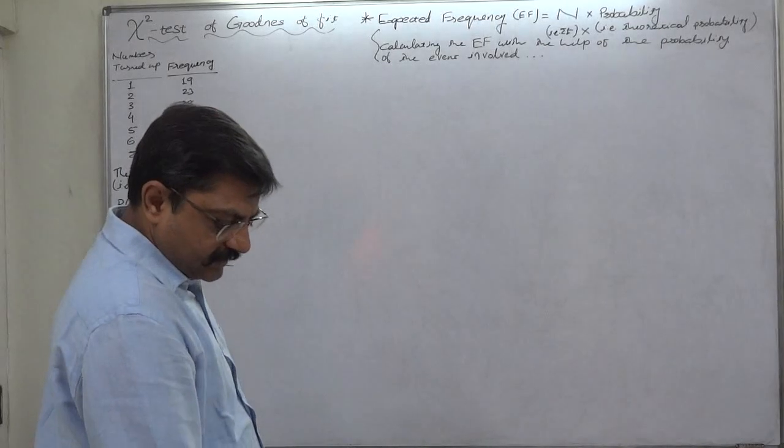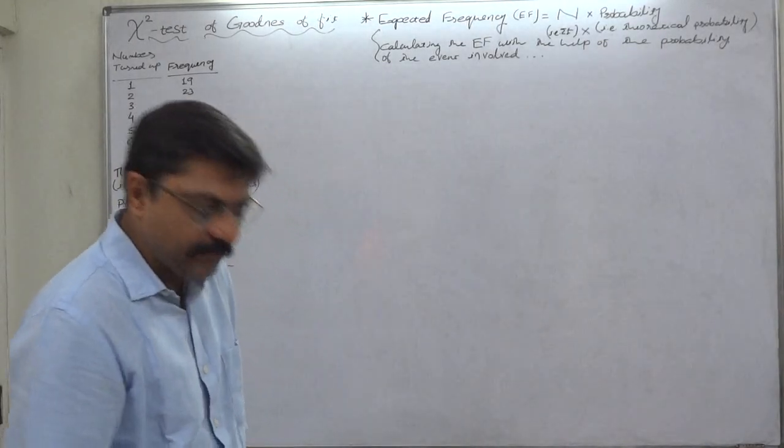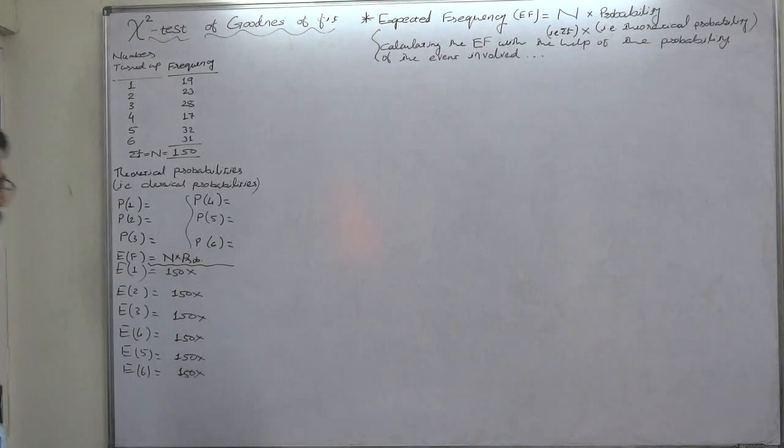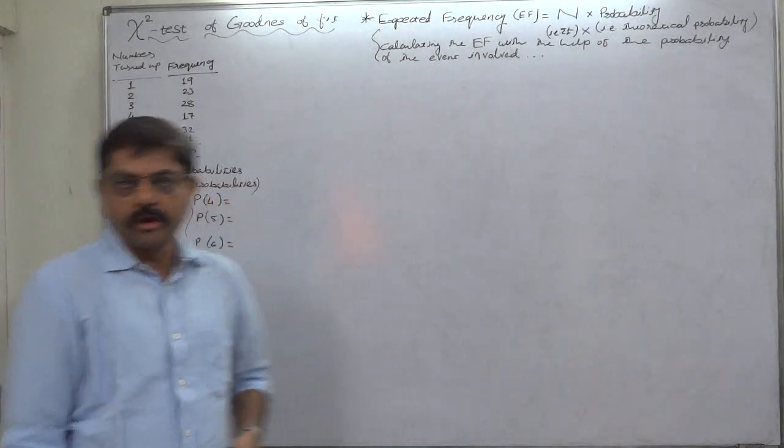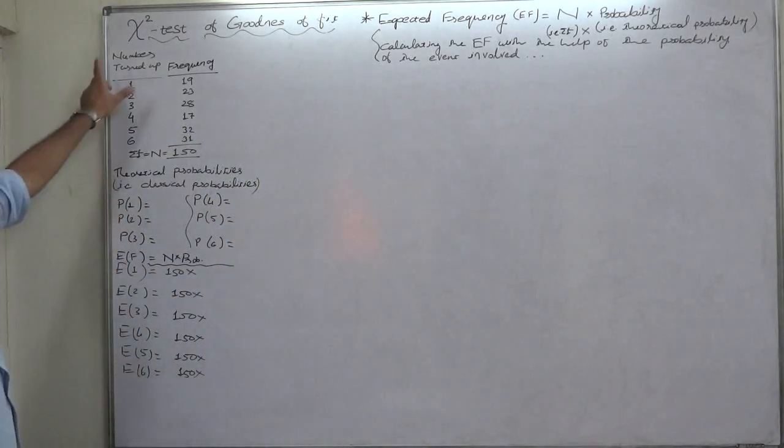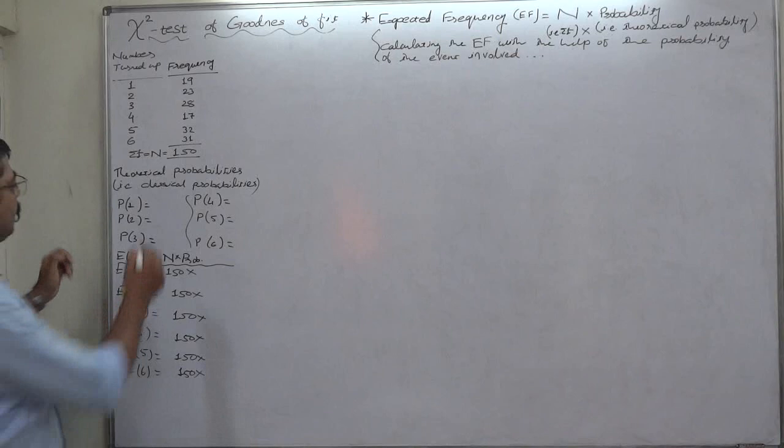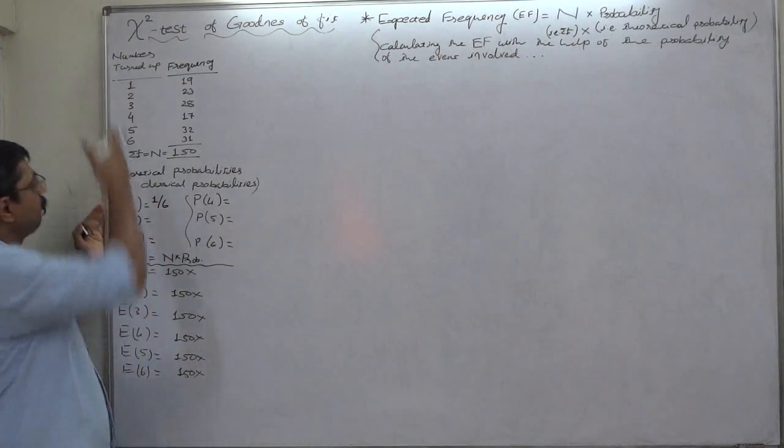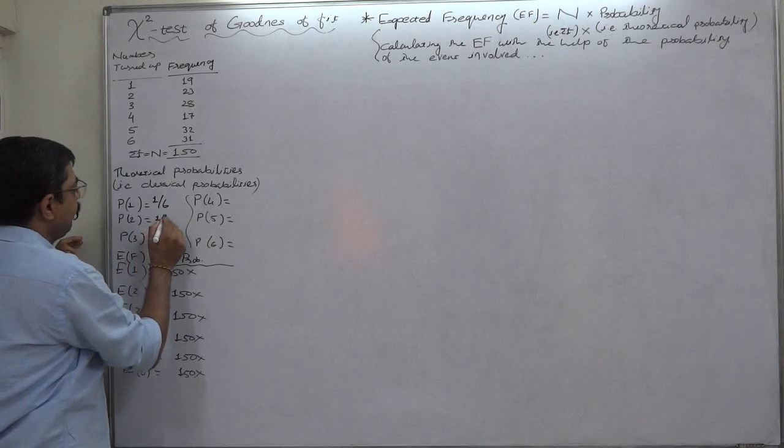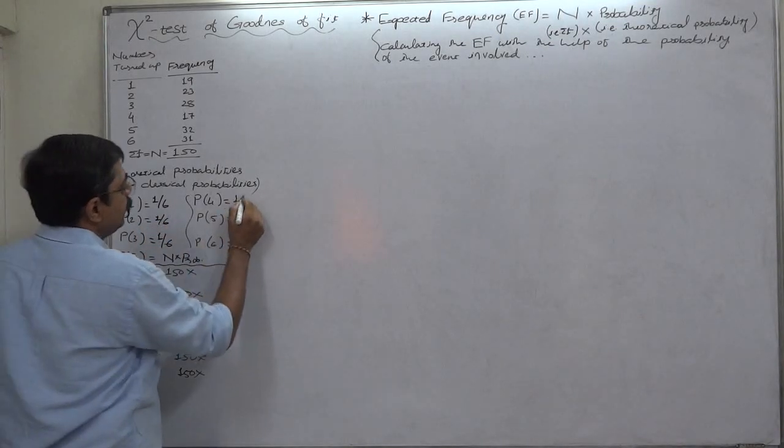Test the hypothesis that the die is unbiased. Take 5% level of significance. The die is unbiased. If we believe that the die is unbiased, then the classical or theoretical probability of each and every outcome comes to 1 by 6. 1 itself is favorable case and total outcomes are 6. Similarly for 2, similarly for 3, 4, 5, and 6.